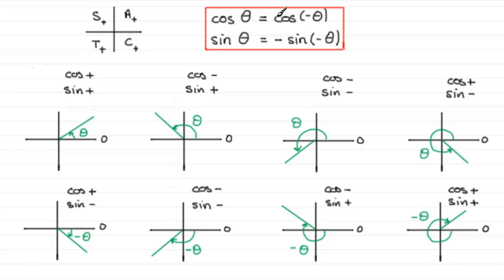I hope that gives you some idea of this result. A good way to check that it works is to take any angle — say 100 degrees. The cosine of 100 degrees should equal the cosine of minus 100 degrees, and the sine of 100 degrees should equal minus the sine of minus 100 degrees. Just check it out on your calculator. I hope that's been useful, and that brings us to the end of this tutorial. Until next time.